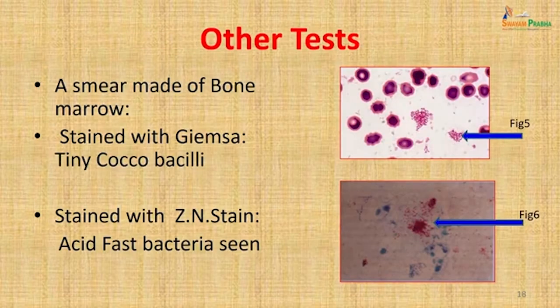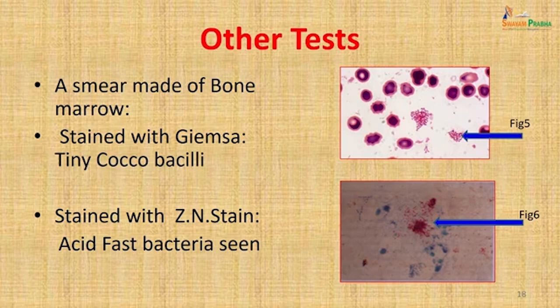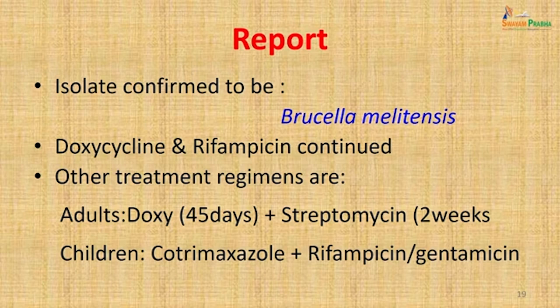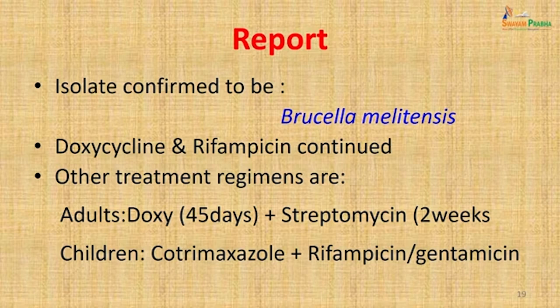A smear was made from the bone marrow and stained with Giemsa — tiny coccobacilli were seen in the smear. It was also stained with ZN stain and acid-fast bacteria were visible. The isolate was confirmed to be Brucella melitensis. The patient was continued on doxycycline and rifampicin. Alternative treatment regimens that could have been attempted include doxycycline with streptomycin, or cotrimoxazole with rifampicin or gentamicin. The patient responded well and the same two drugs were continued.